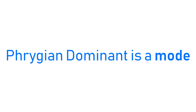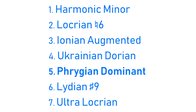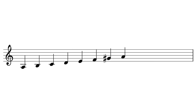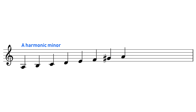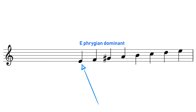Phrygian Dominant is not just a scale, but it's also a mode — it's the fifth mode of the harmonic minor scale. A mode is when you take a scale, in this case the harmonic minor scale, and then treat a different note as the tonic. So for example, if we take the scale of A harmonic minor but then treat the fifth note, E, as the tonic — the root note of the scale — then we now have an E Phrygian Dominant scale. Both A harmonic minor and E Phrygian Dominant use the exact same set of seven notes, but by treating a different note as the tonic, as the center of gravity, it gives the music a different sound, a different tonality.